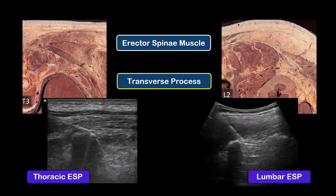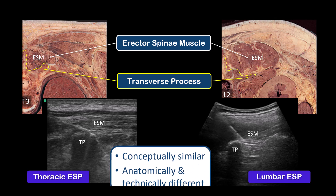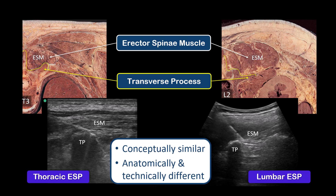The lumbar ESP block is conceptually similar to the thoracic ESP block in that the bony transverse processes and overlying erector spinae muscle are key landmarks, and the injection of local anesthetic is performed into the tissue planes deep to the erector spinae muscle. However, there are critical differences in lumbar paraspinal anatomy versus thoracic paraspinal anatomy, and thus lumbar ESP and thoracic ESP blocks are very different techniques.